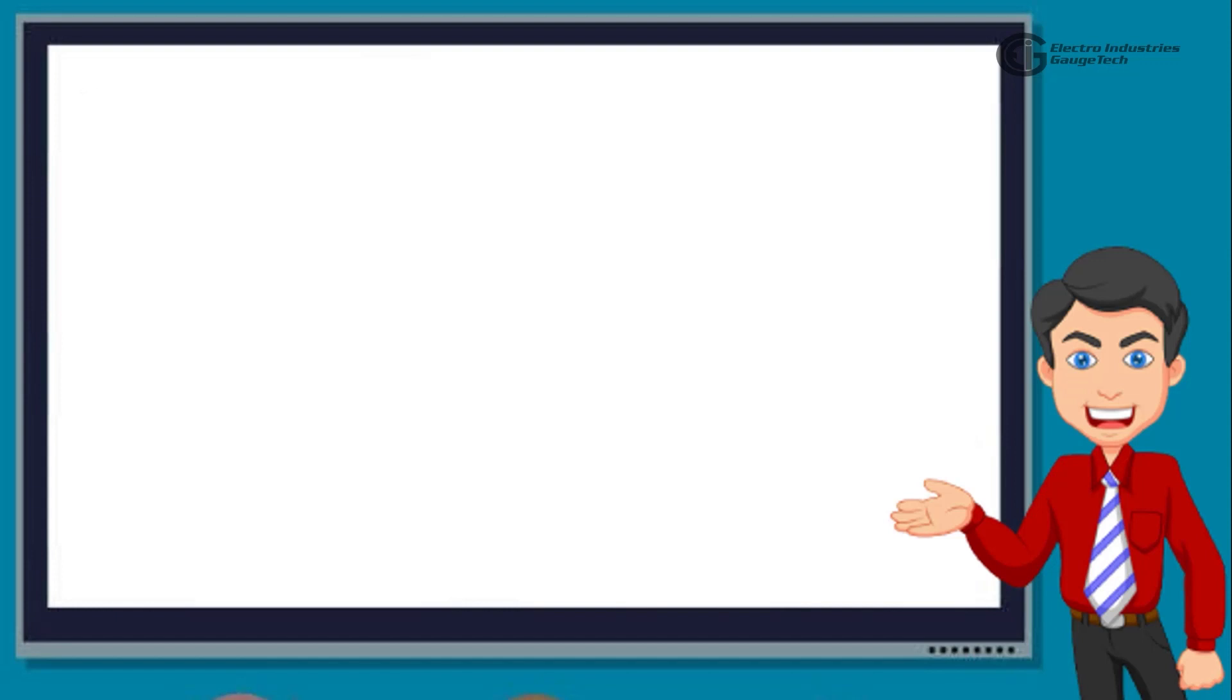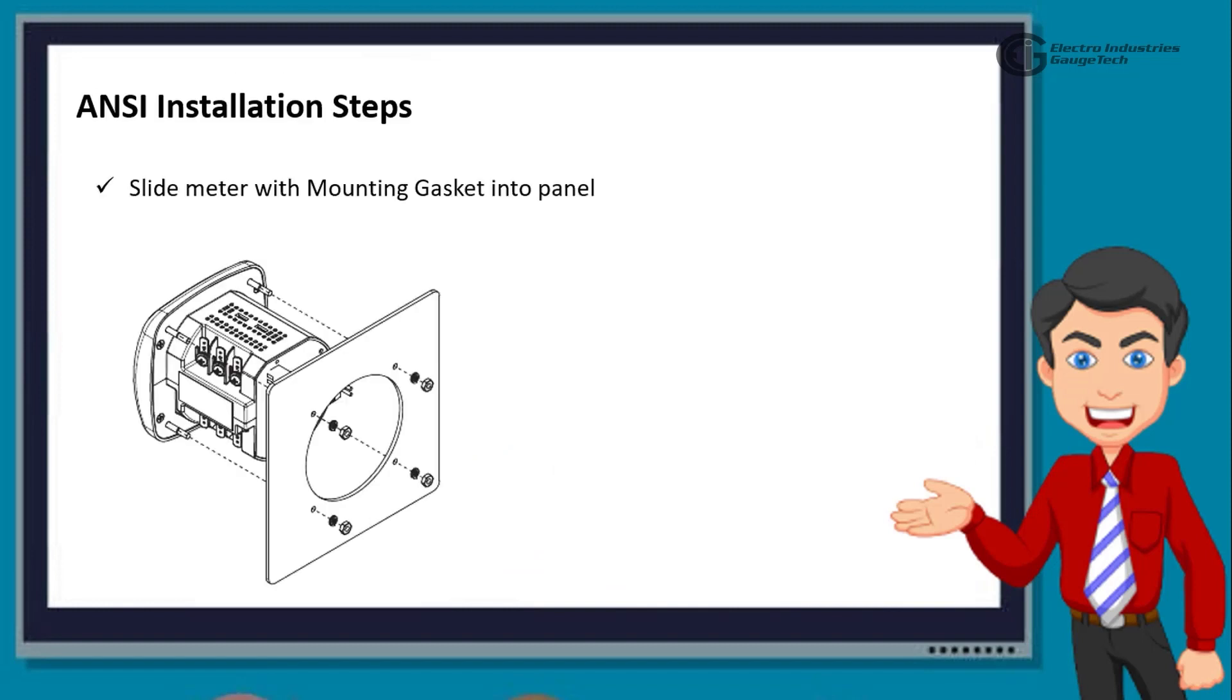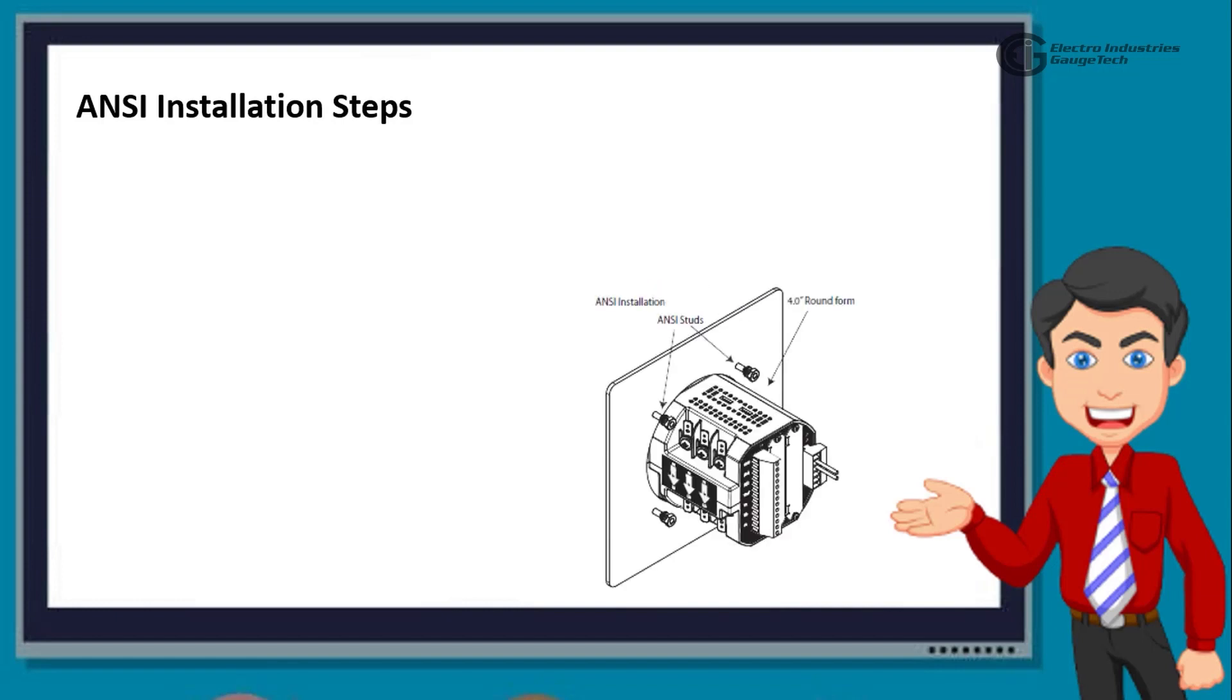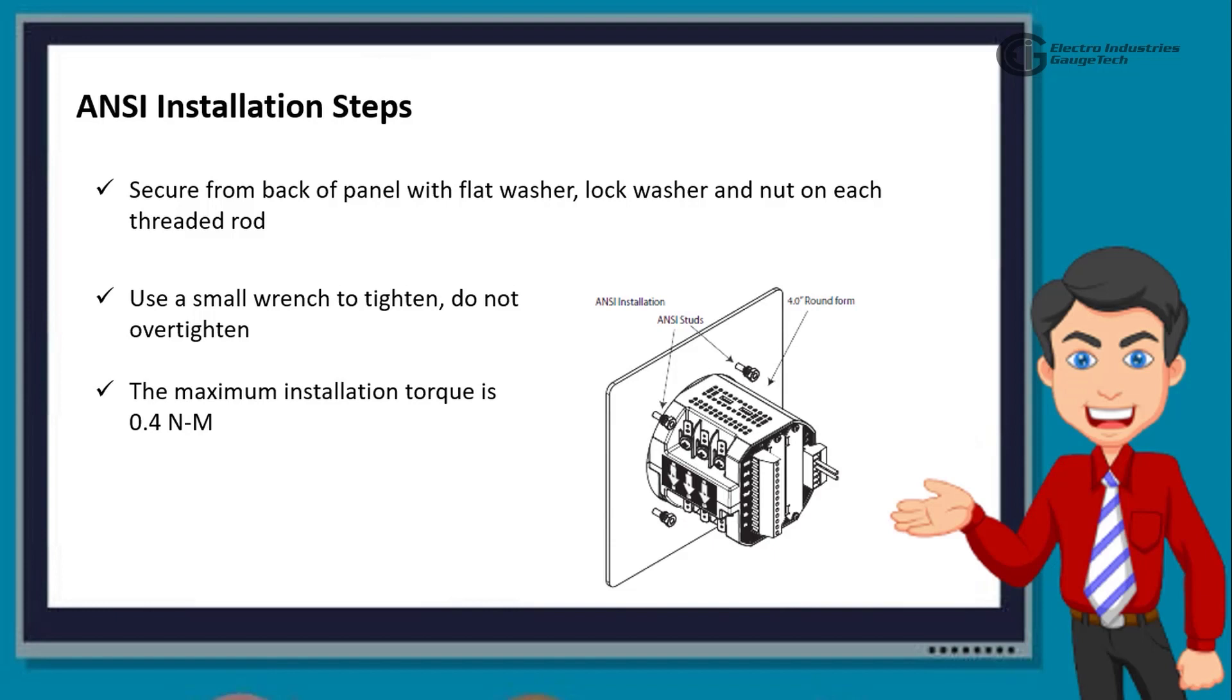Next, we look at the ANSI installation steps. First one is slide meter with mounting gasket into panel. Then, secure from back of panel with flat washer, lock washer, and nut on each threaded rod. Use a small wrench to tighten. Do not over-tighten. The maximum installation torque is 0.4 Newton meter.